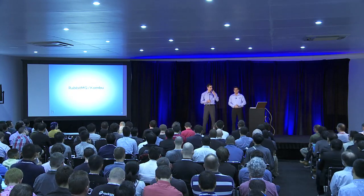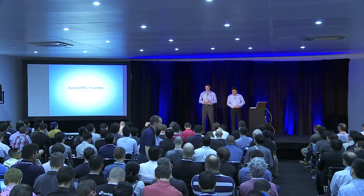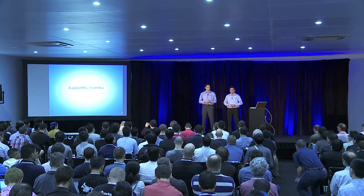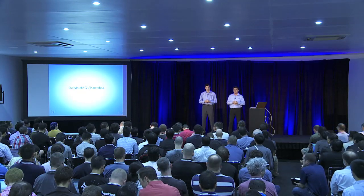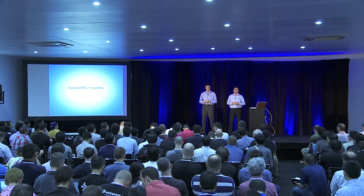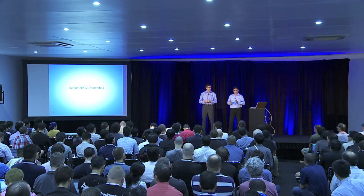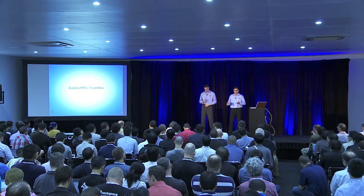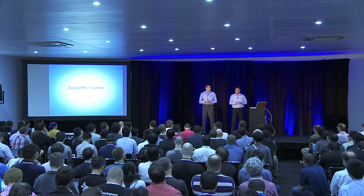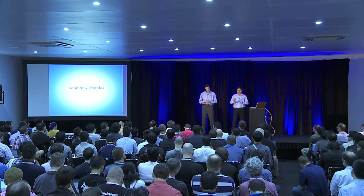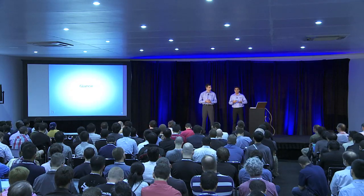RabbitMQ is the AMQP implementation most OpenStack deployments use, and you can make RabbitMQ highly available in two ways. First, you can have active-passive clusters of RabbitMQ. Second, you have mirrored queues. The pain point with mirrored queues is consistency issues — some nodes may see duplicate messages, and others may find messages haven't arrived. For active-passive clusters, you must have the Erlang cookie on every node where RabbitMQ is running. Kombu is the Python library implementing the RabbitMQ client.